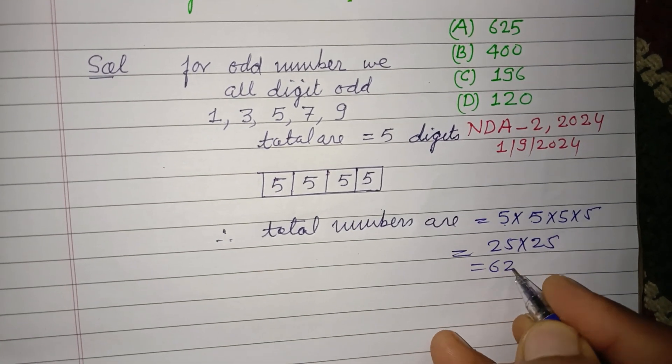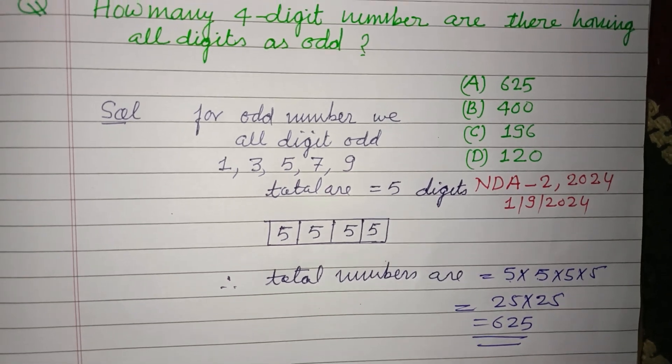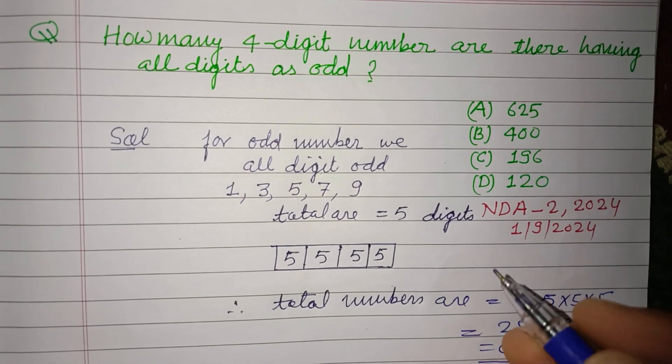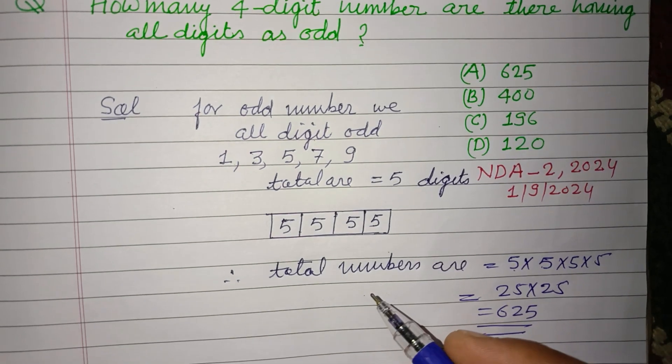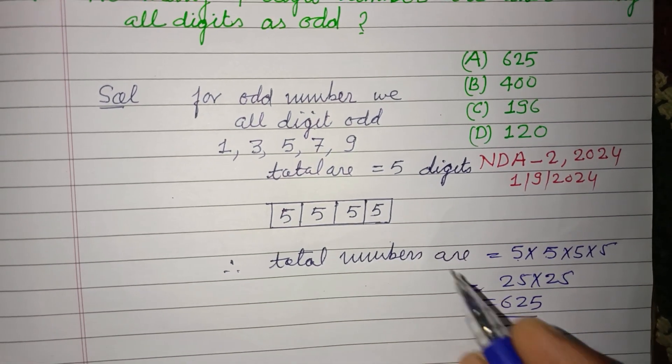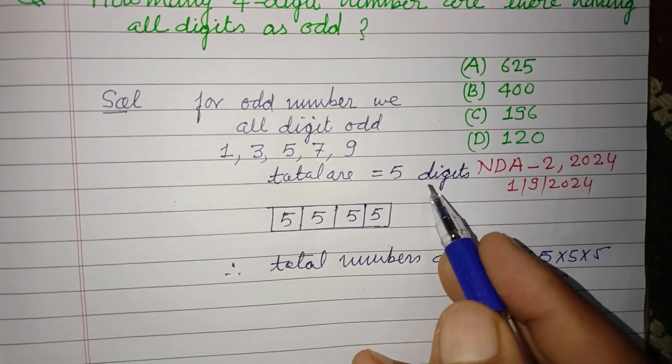This is 625. 625 is the number of odd digit numbers which can be formed by the odd digits.